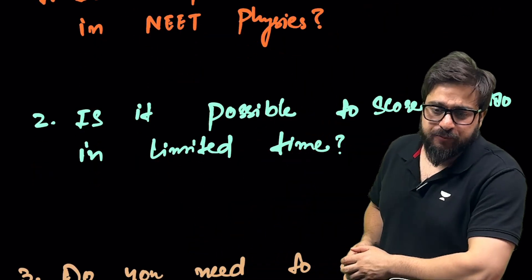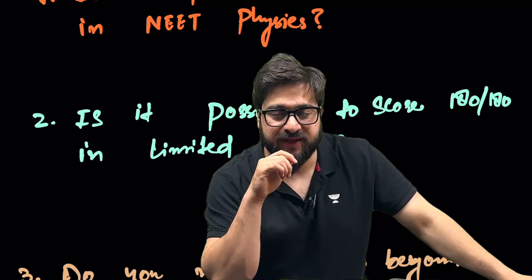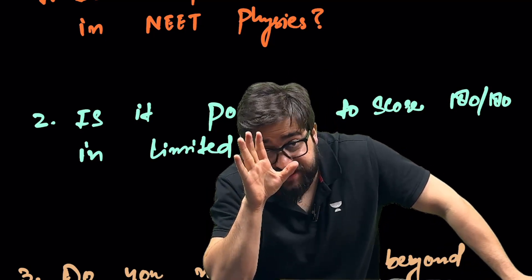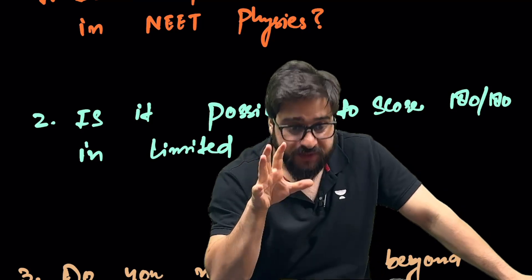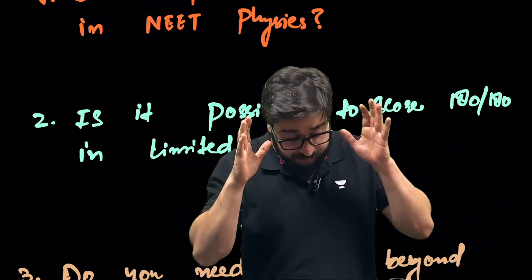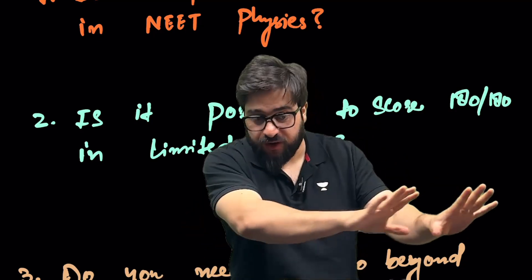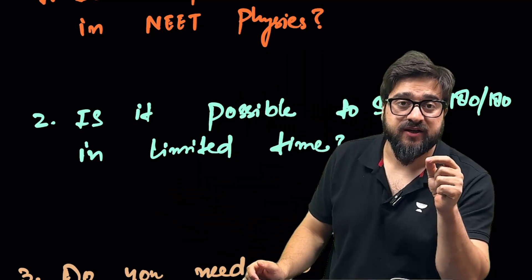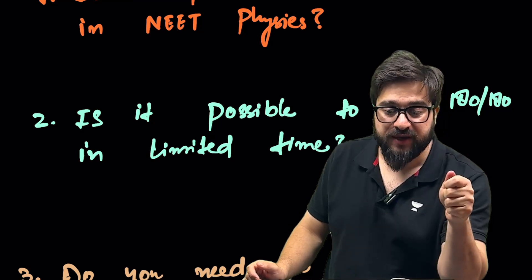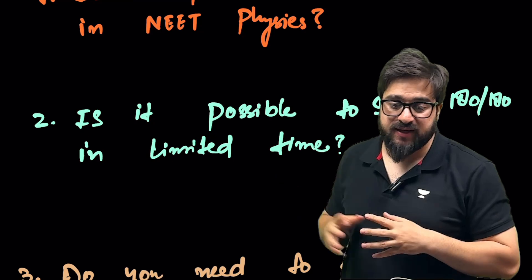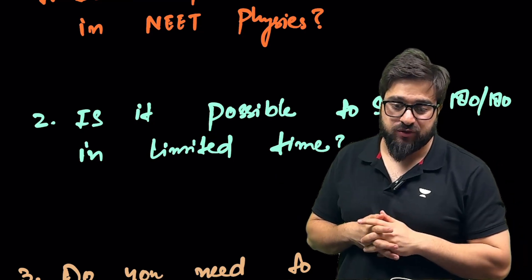Next, is it possible to score 180 out of 180 in limited time? I have seen students who have cracked the NEET in just, we say, few months. They got 180 out of 180 by studying the physics for like five to six months, but they were extremely consistent. They were dedicated. Their motivation was up to the mark and that became the main reason they basically achieved this.